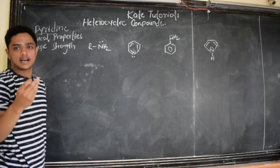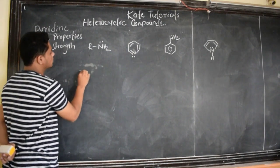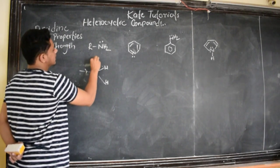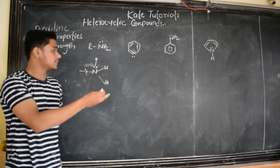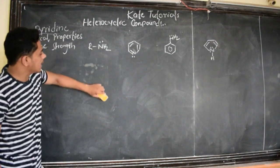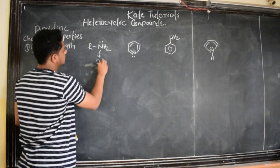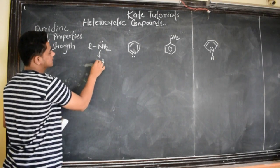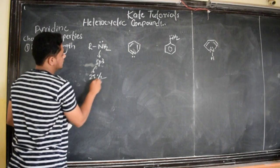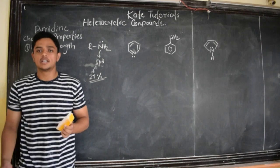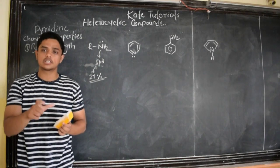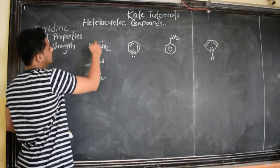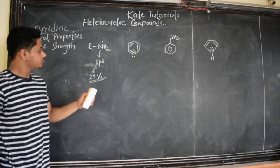In R-NH₂, R is any methyl or similar group. These groups donate electron density towards nitrogen, because of which nitrogen can easily donate its electron density to an electrophile. So it is a good base. The hybridization of nitrogen here is SP3. In SP3, the percentage of S-character is around 25%. Lesser the percentage of S-character, the orbital is not so close to the nucleus, so the electron can be easily donated. Combined with the inductive effect of the R group, it is basic.